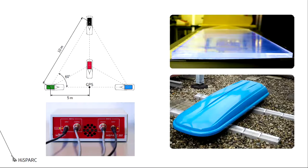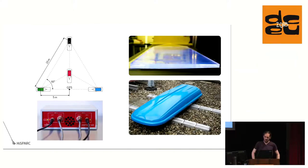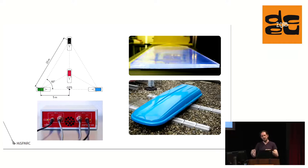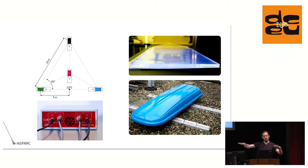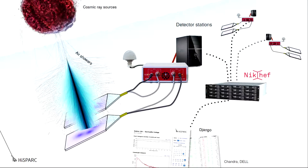At HiSPARC we detect those particles. In the top right you see a scintillator which glows when particles pass through it. We wrap those in light-tight plastic and put them in boxes. Photo multipliers are connected which see the scintillator glow and convert it to a strong electrical signal. A little box then converts the electrical signals into bits and bytes, reading out the signal every two and a half nanoseconds. We put several of those detectors close together — if multiple are hit, you're dealing with an air shower; if only one sees something, it's probably background radiation.